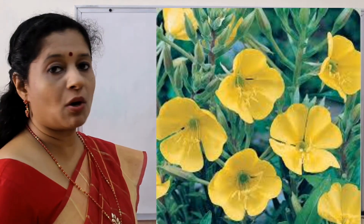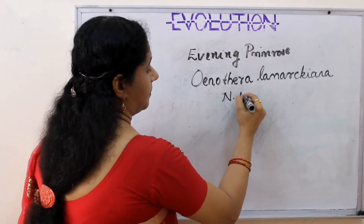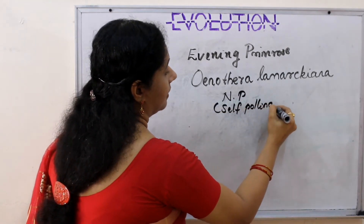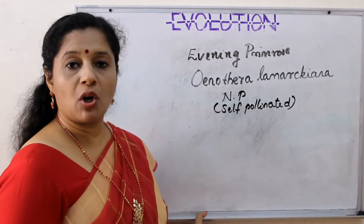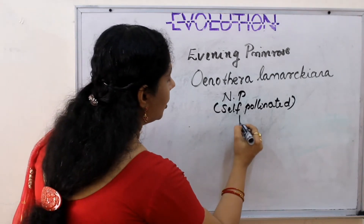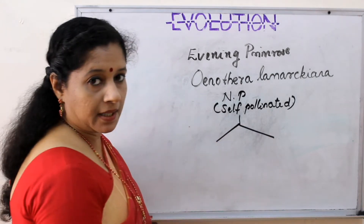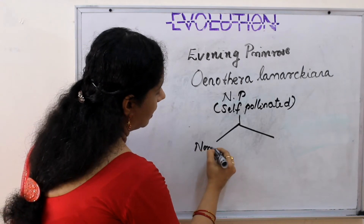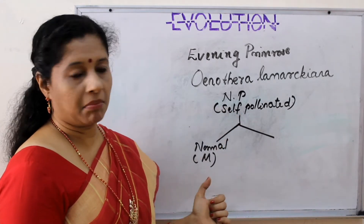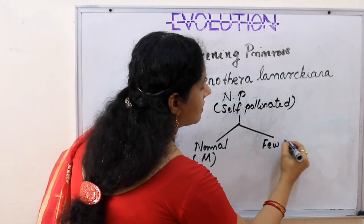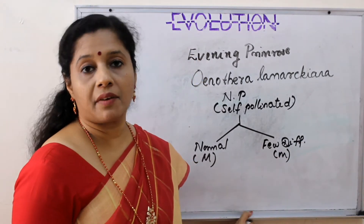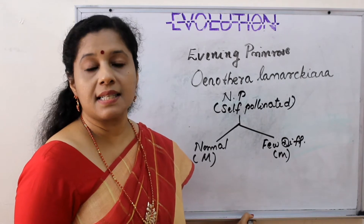Hugo de Vries conducted his experiments in a plant called the Evening Primrose, or Oenothera lamarckiana, which is the scientific name of that plant. Once he self-pollinated the normal plants, he was expecting offspring similar to the parents, but he got two different types of offspring. Majority of the plants were normal, like the parent plant, but a few different varieties were also there - a minority.